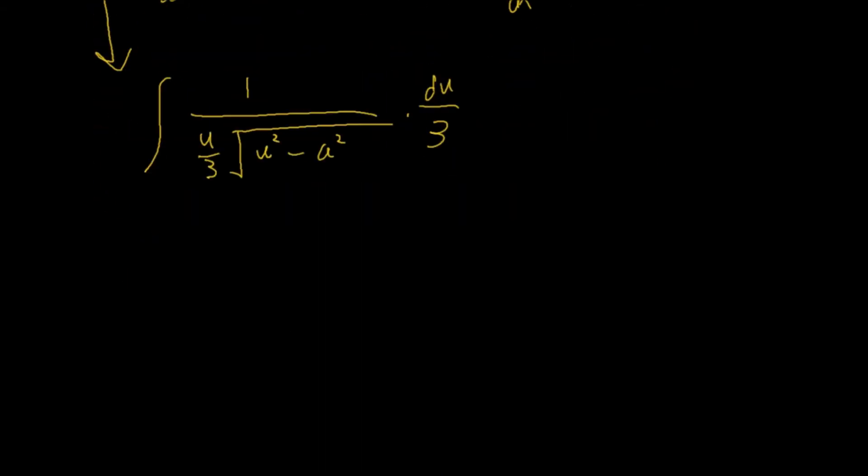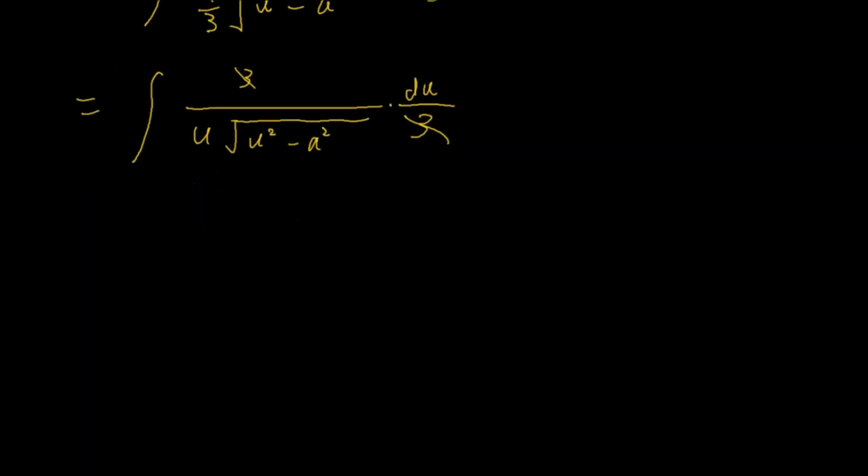Let's see what we can get to. Now, u over 3 here, this constant 3, is basically 1 over 1 over 3, which is 3. So, we can write this as integral 3 over u, times the square root of u squared minus a squared, times du over 3. Now, you notice that the 3 and 3 can cancel out. So, what we really have left is integral 1 over u, times the square root of u squared minus a squared, du.